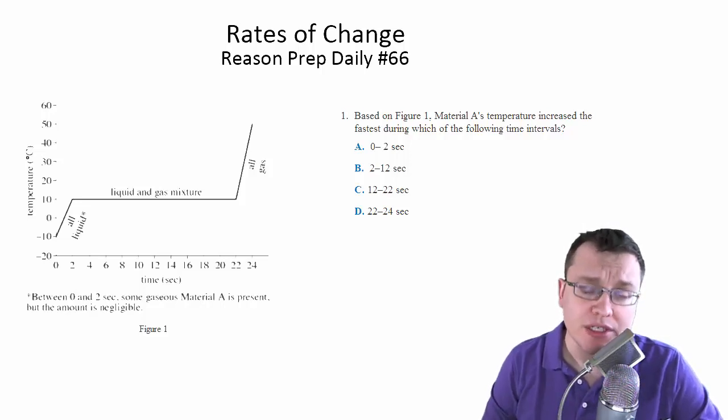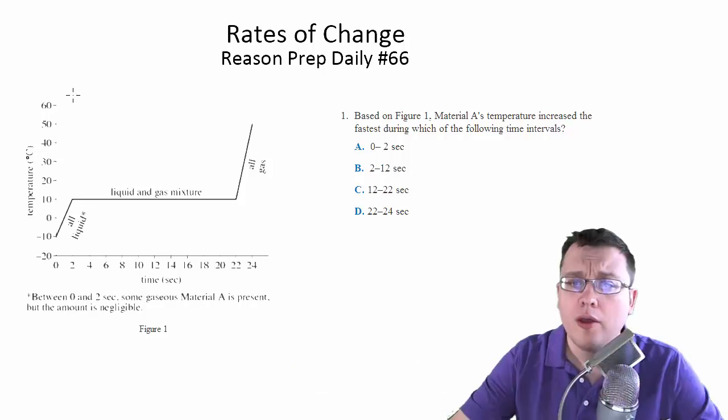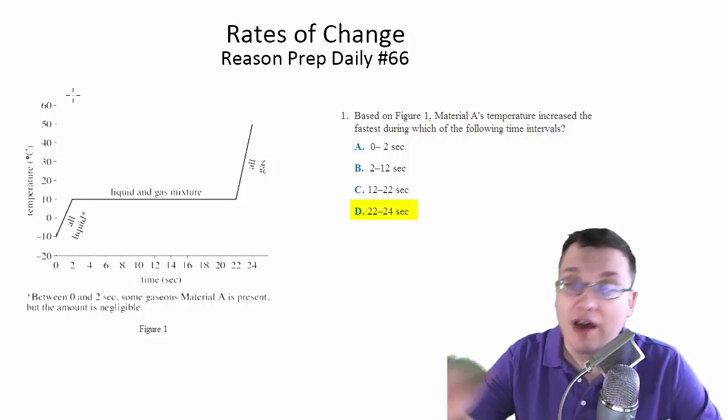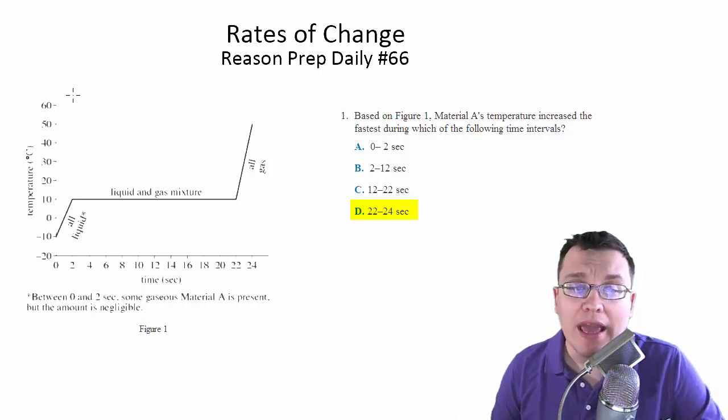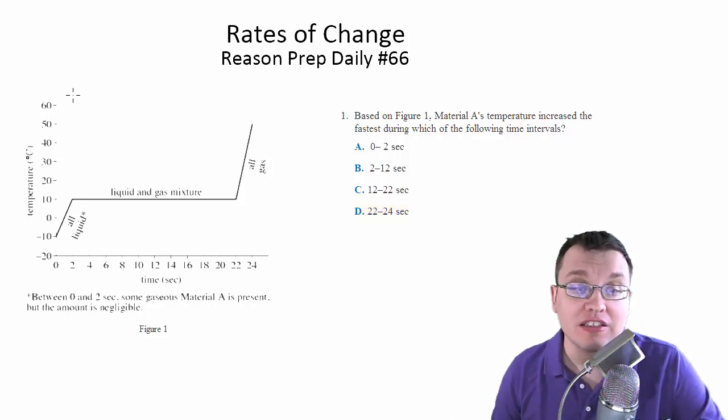Go ahead and try this ACT science question. Based on Figure 1, Material A's temperature increased the fastest during which of the following time intervals? This is about rate of change, right? In which intervals did this increase at the fastest possible rate?